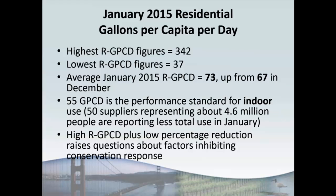High RGPCD numbers and low percent conservation levels raise questions about the success of conservation efforts. For January, a number of suppliers had a negative percent reduction, meaning they used more water this year than in 2013, and had a high RGPCD. Staff are taking into account that it was a very dry month, and expect those numbers to shift back down if more rain comes.